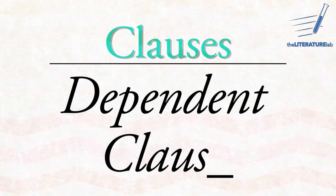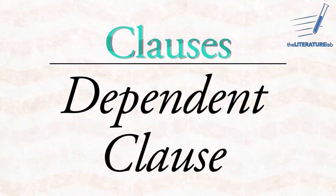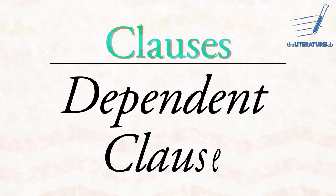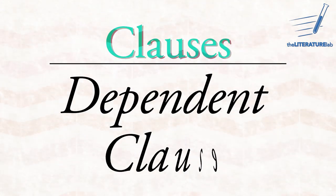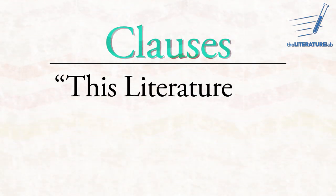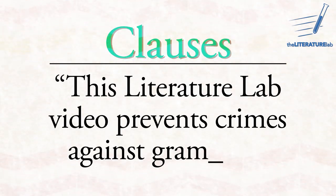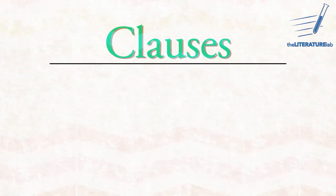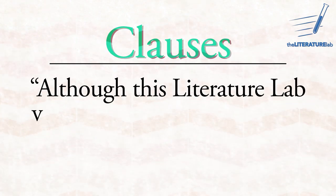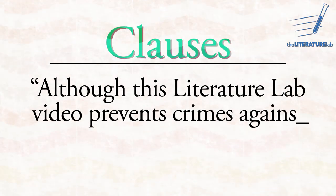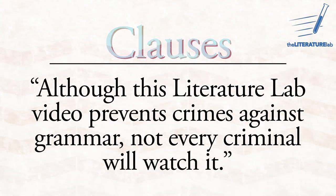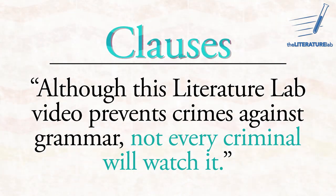Notice how clauses are usually, but not always, divided by commas. Good rule of thumb. A dependent clause like 'while you teach,' or 'while my guitar gently weeps,' is incomplete on its own — it needs another clause. Take another example: 'This Literature Lab video prevents crimes against grammar.' That's an independent clause because it's a complete sentence, but we can make it dependent: 'Although this Literature Lab video prevents crimes against grammar, not every criminal will watch it.' You need the second clause to complete the thought.